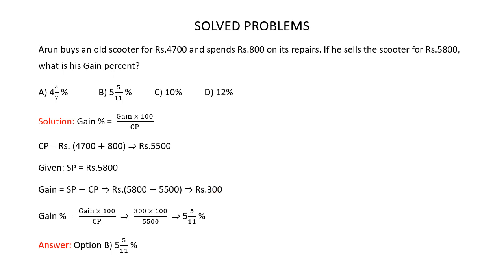The selling price is Rs 5800, so gain is 5800 minus 5500, which is Rs 300. Substituting these values in the formula — 300 multiplied by 100 divided by 5500 — we get gain percent as 5 5/11 percent. So the correct answer is option B, 5 5/11 percent.